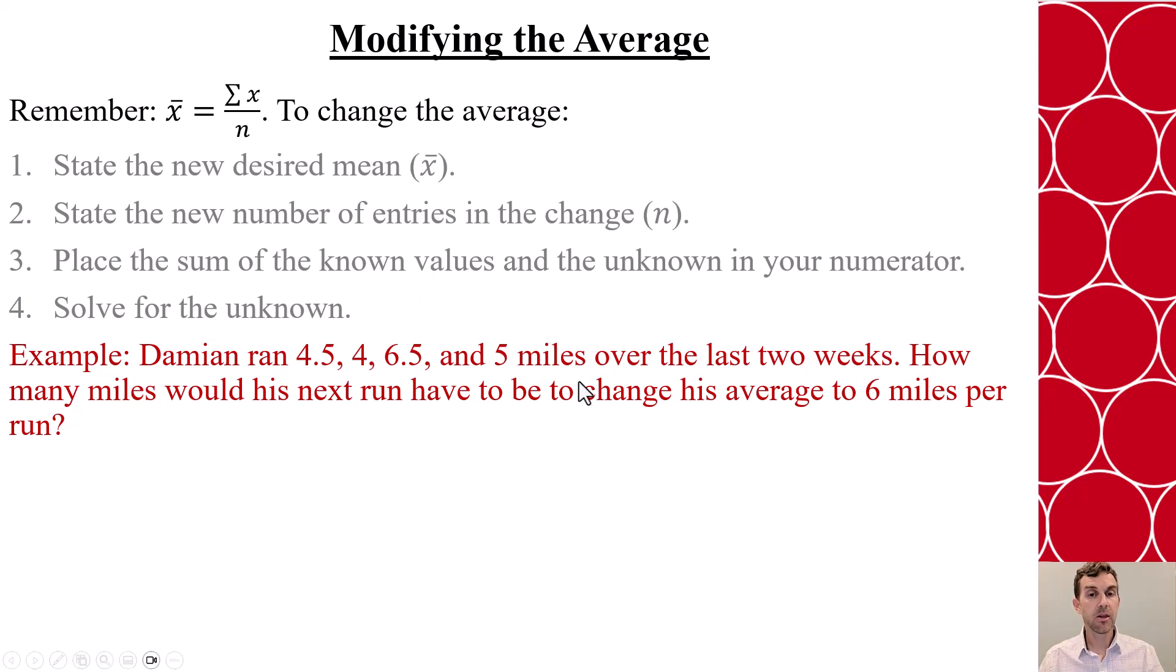So we know that the new desired average is 6 miles per run. We know that instead of having four entries, which we already have, we're going to have one more entry because it's the next run. So we have a total of five entries that we're looking at.